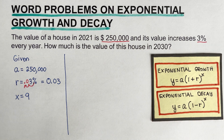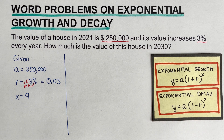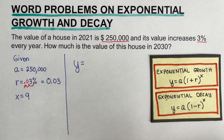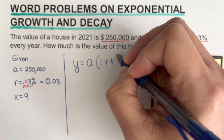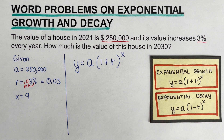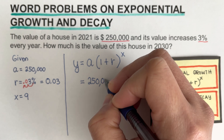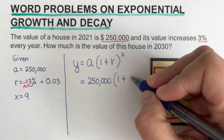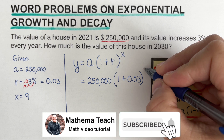Going back to our two formulas, since it says increases, this is exponential growth. We write the equation: y — the final value we want — equals a times one plus r raised to the power x. All we need to do is plug values in. So y equals 250,000 times one plus 0.03 raised to the power nine.